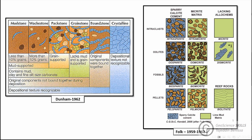For boundstone, the texture is different as it refers to original components of the rock that are fused or bound together, such as coral and algae. For crystalline texture, it usually refers to carbonate rocks where the original texture has been destroyed due to diagenetic processes such as dolomitization, redolomitization, recrystallization, and others.